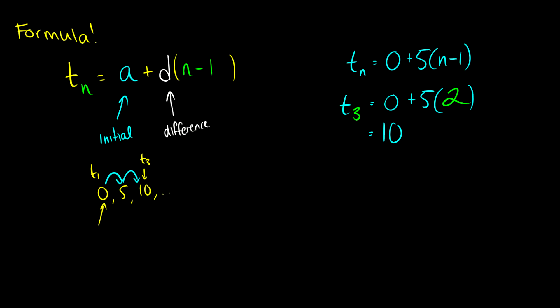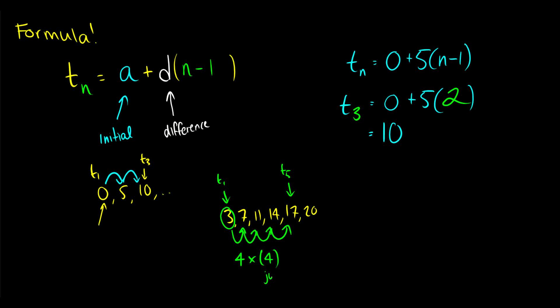So this is an intuitive approach. Let's say we have 3, 7, 11, 14, 17, 20 — I'll write out a few terms. We want to start at 3, our first term, and get over to the fifth term. We start at 3 and then add 4, add 4 again, add 4 one more time, and a last time — so we add 4 four times. That's the difference times the number of jumps we made, which gets us the fifth term. So the formula says: take the initial value, then add the difference times the number of jumps to reach that nth term.